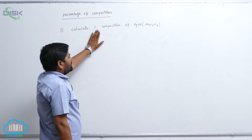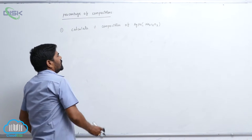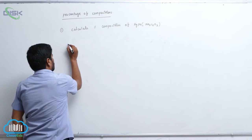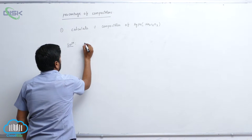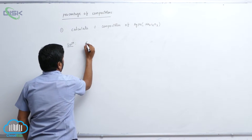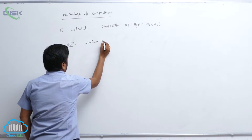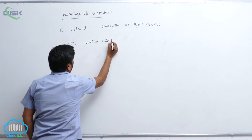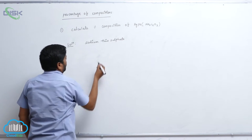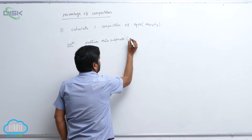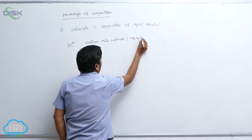Calculate the percentage composition of Na₂S₂O₃. Solution: Sodium Thiosulfate is commonly known as Na₂S₂O₃.